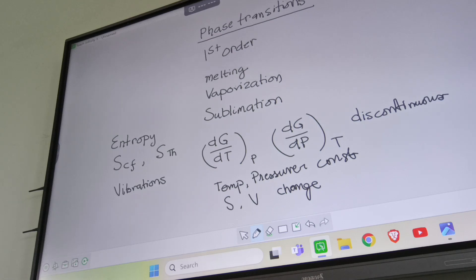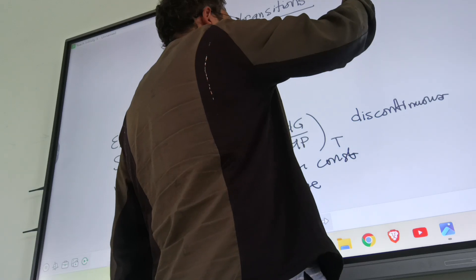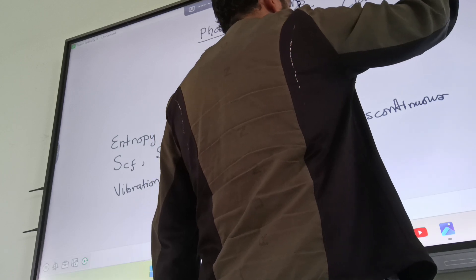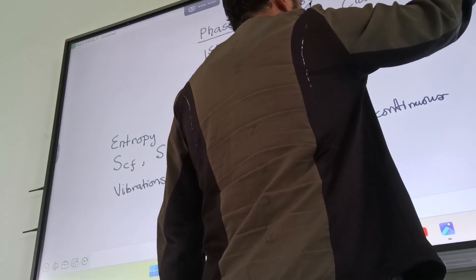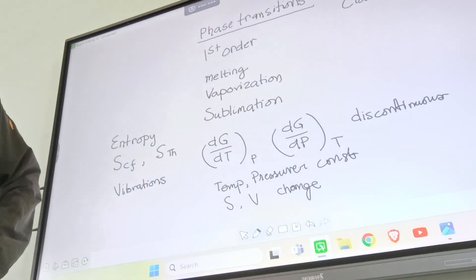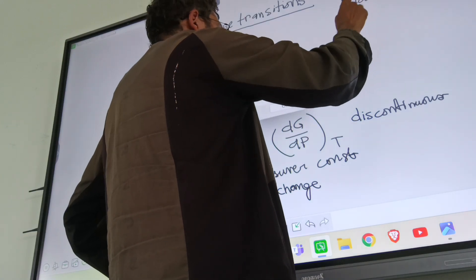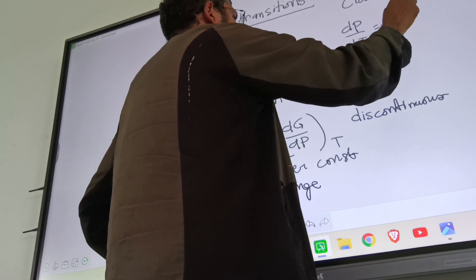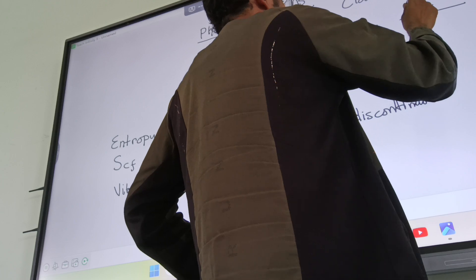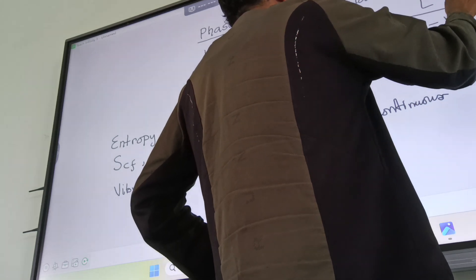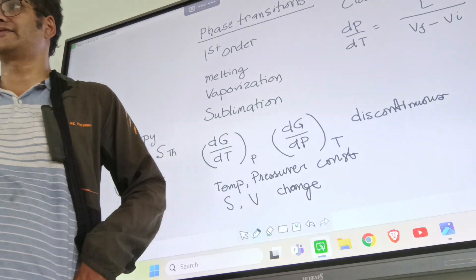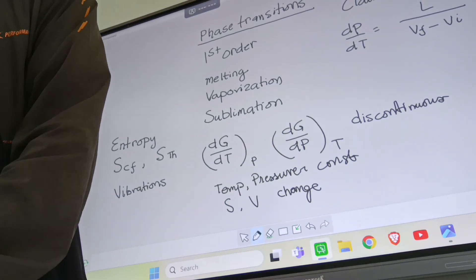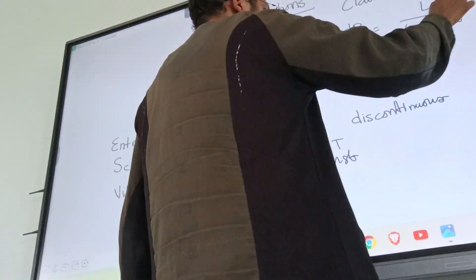The equation to show the variation of this sort of first-order phase transition is called Clausius-Clapeyron equation. The Clausius-Clapeyron equation tells that dP by dT is equal to L divided by T times (V_f minus V_i). Sorry, this is temperature.